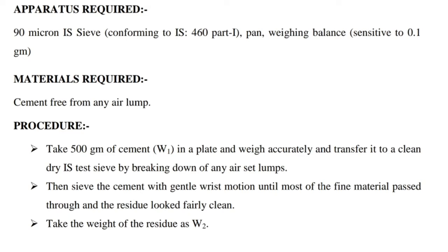Procedure: Take 500 grams of cement (W1) in a plate, weigh accurately, and transfer it to a clean dry IS sieve by breaking down any air-set lumps. Then sieve the cement with gentle wrist motion until most of the fine material passes through and the residue looks fairly clean. Take the weight of the residue as W2.